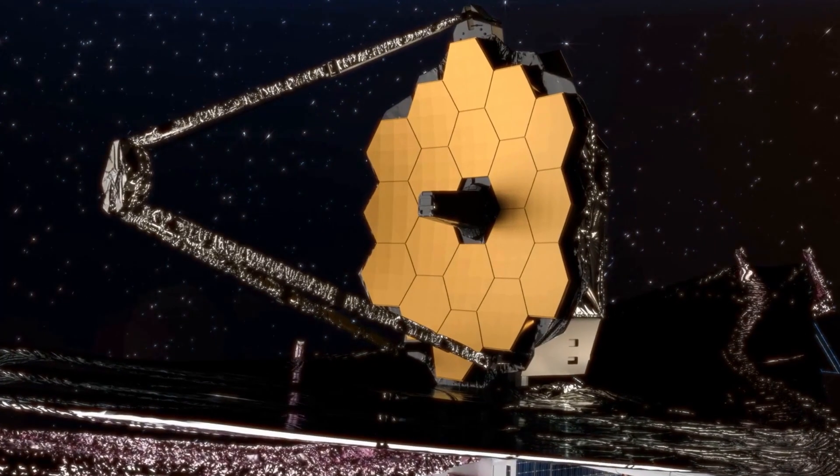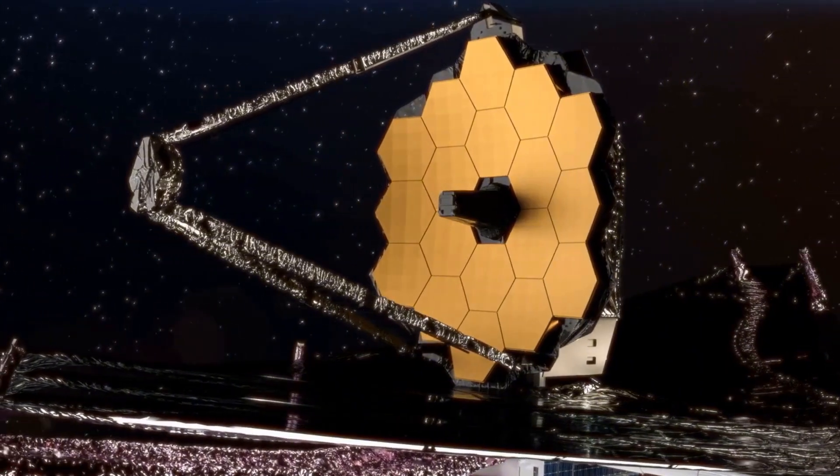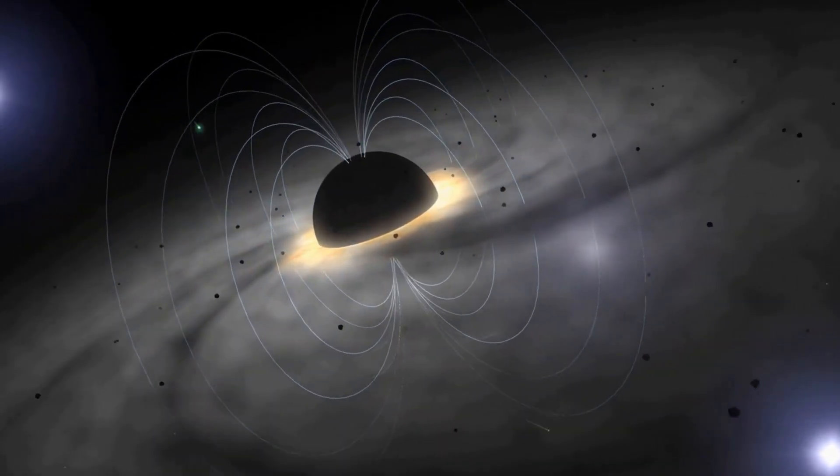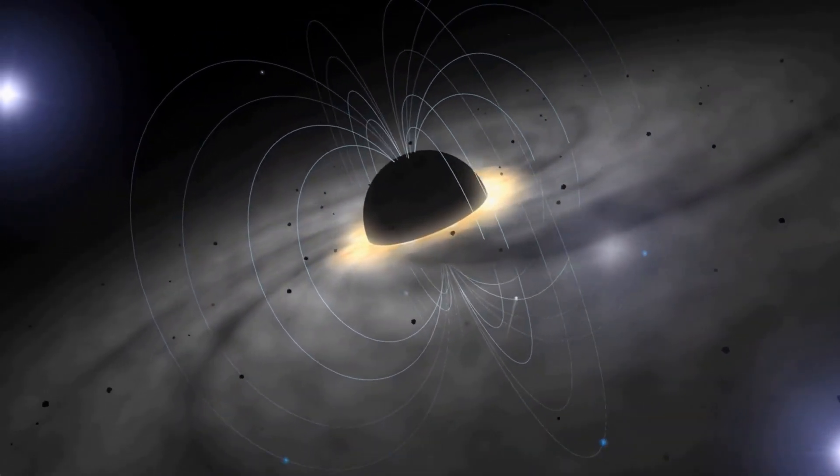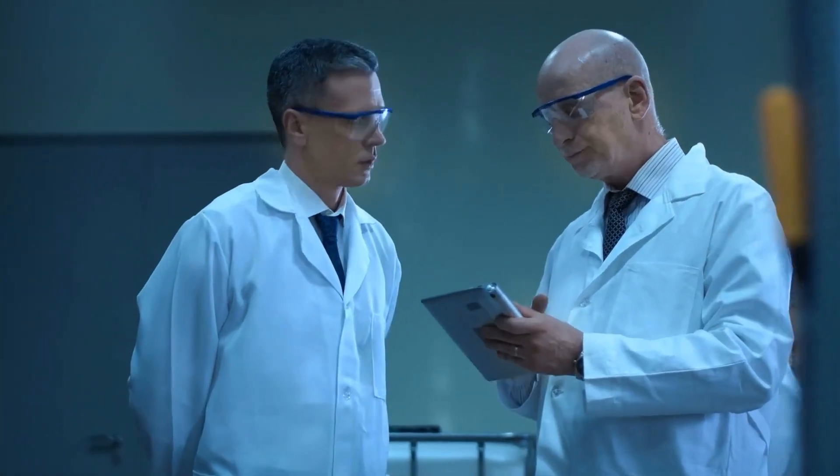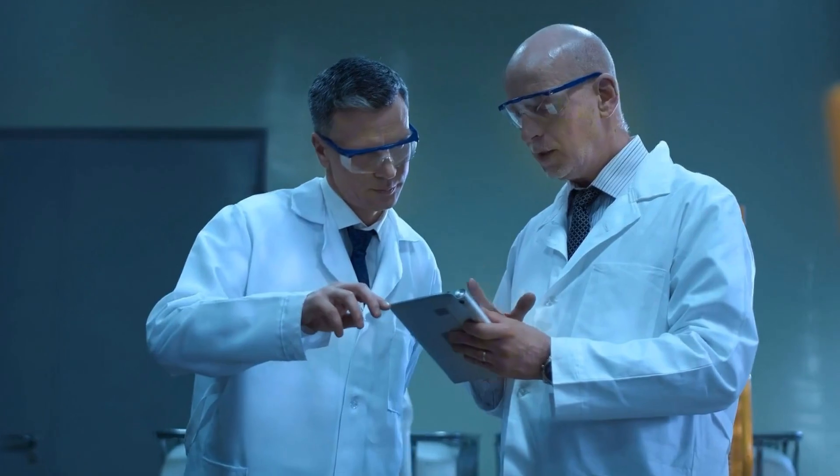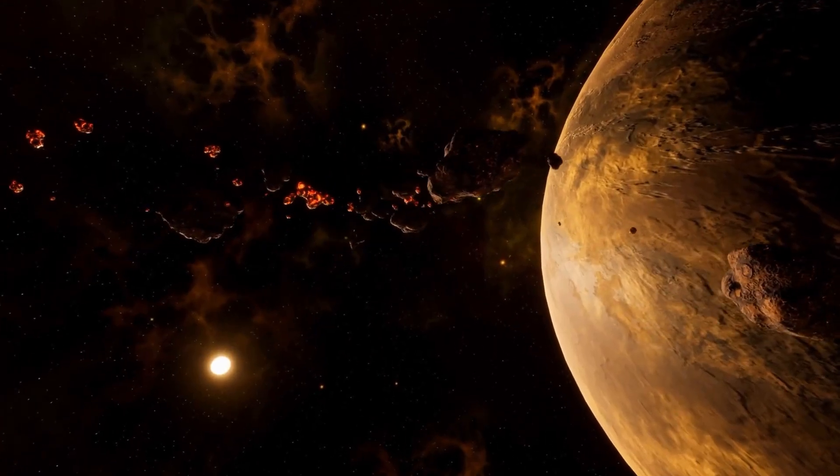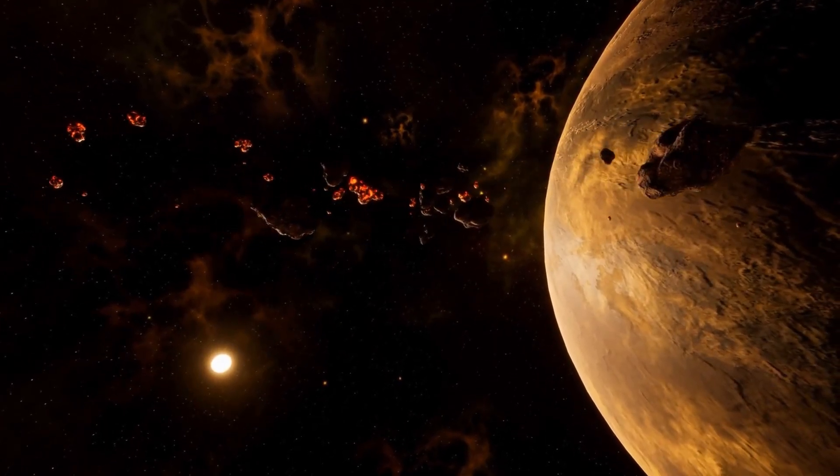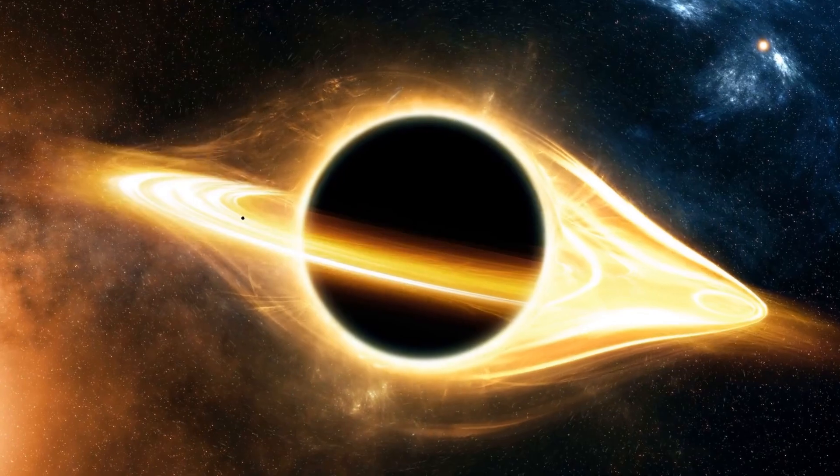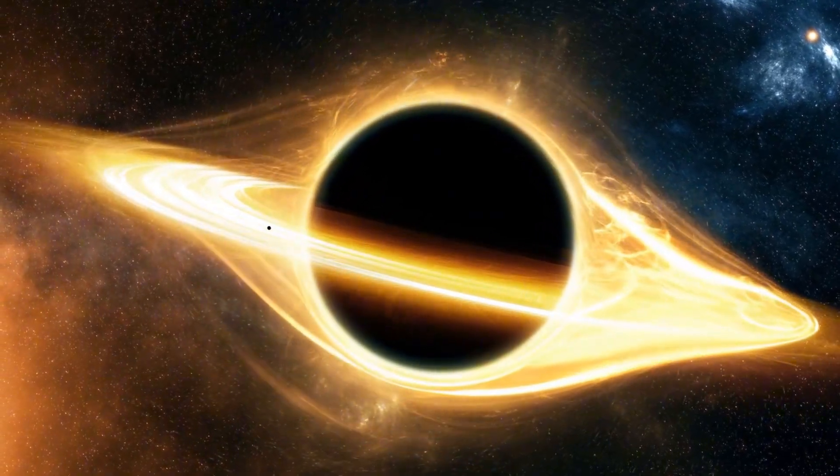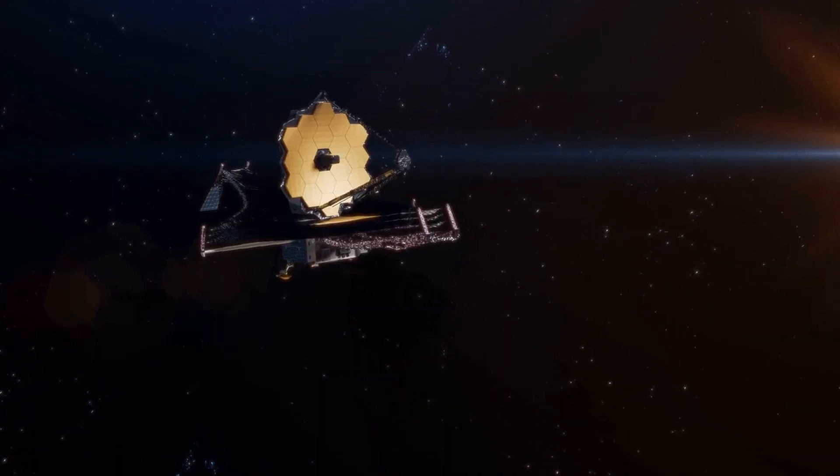Webb's data reveals an uneven collapse. Magnetic chaos, asymmetrical fallback, material being pulled inward instead of exploding outward. Some scientists now believe we might be witnessing the birth of an entirely new type of object, theorized for decades but never seen. A transitional relic between neutron star and black hole. And Webb might have just found it.